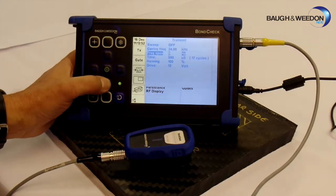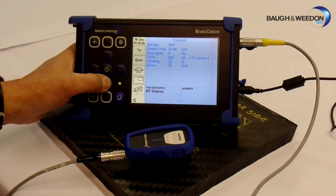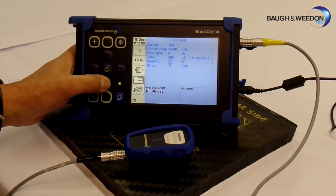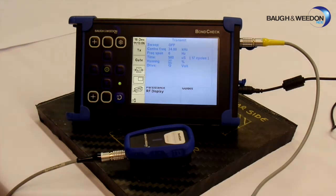The only thing I am going to go down and change is the Hanning. I am going to take it down to 50%. The reason I am doing this is because we are simulating, setting up for an inspection, or finding out if an inspection is viable.